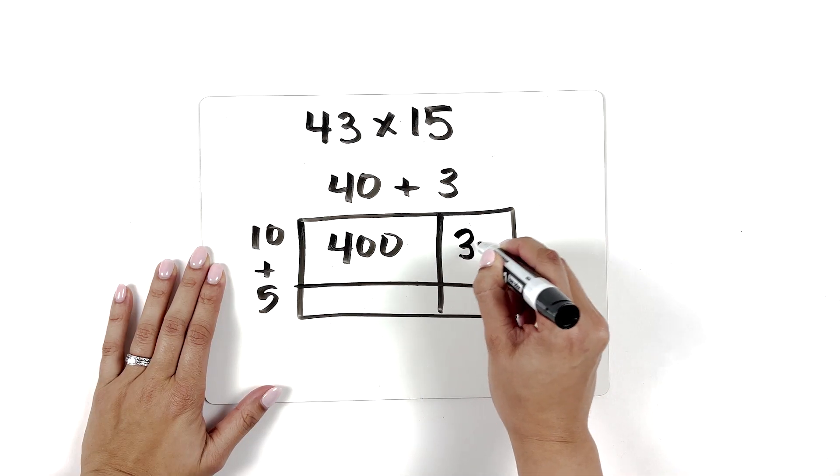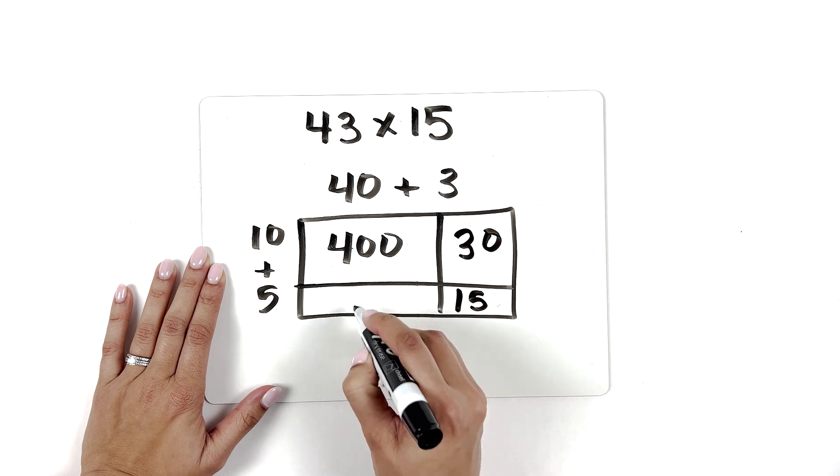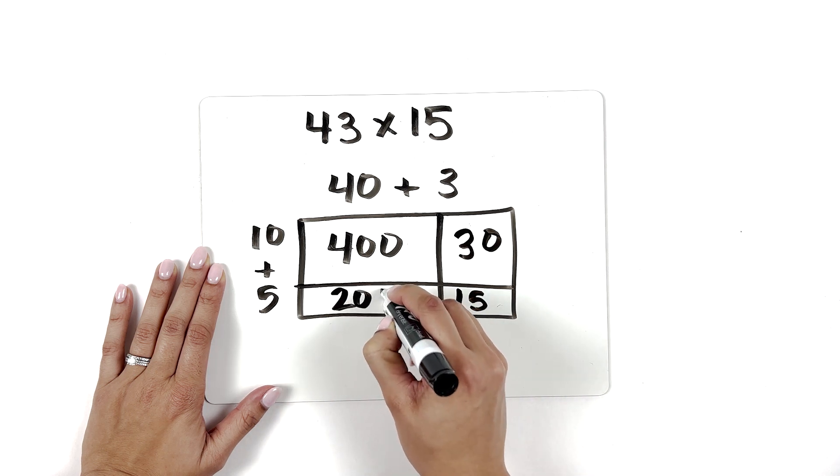Another teacher in the article pointed out that the area model is a really important model because it emphasizes place value. We often do so much work to build students' understanding of place value, and then we throw that all out the window when it comes to the multiplication algorithm. The area model is great for building on that place value foundation, extending and deepening students' understanding — and it's also really good practice for students multiplying by multiples of 10. My takeaway here is to keep doing what you're doing if you're already using the area model, because it is needed and important.